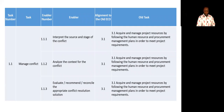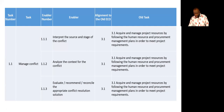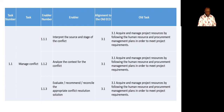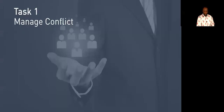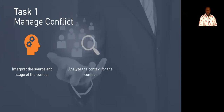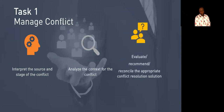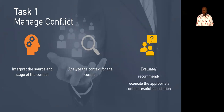Manage conflict. Highly recommend that you open up the PMBOK guide and feel comfortable with those five strategies: withdraw, smooth, compromise, force, collaborate. You've got to be really firm on the language. To make it very clear, you've got to understand the source first, then analyze it next, and then evaluate or recommend.